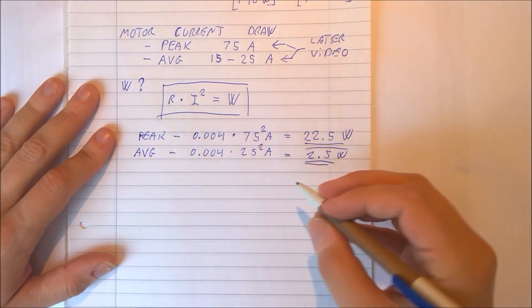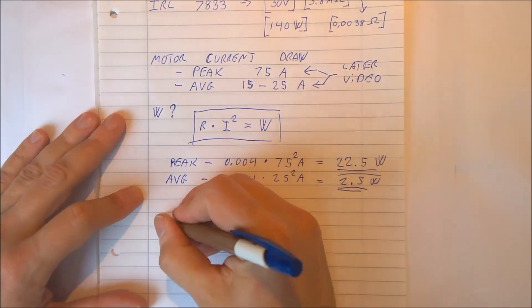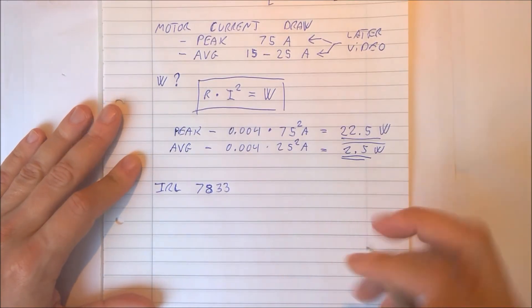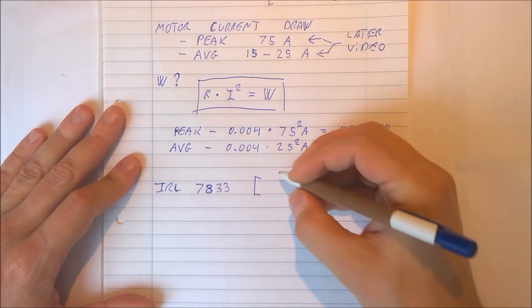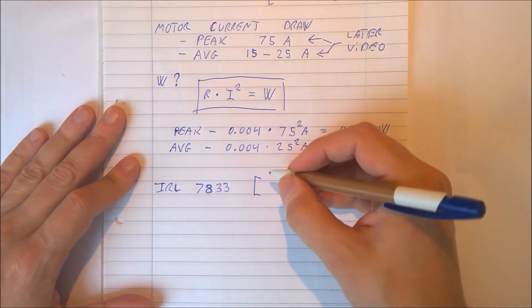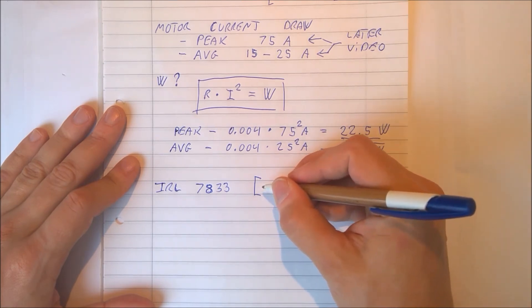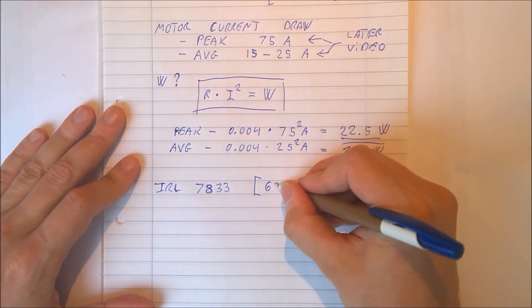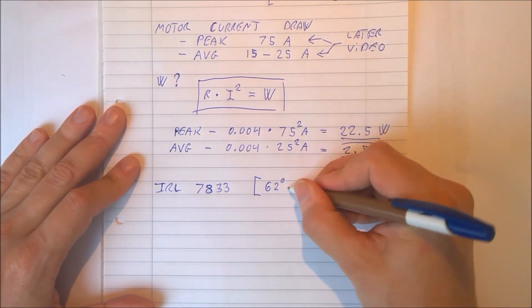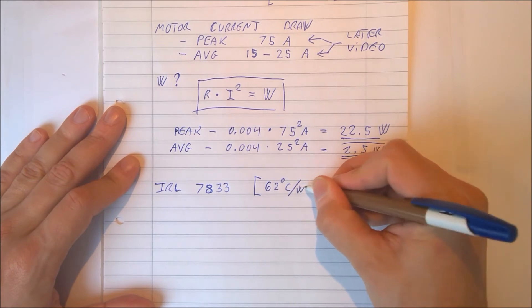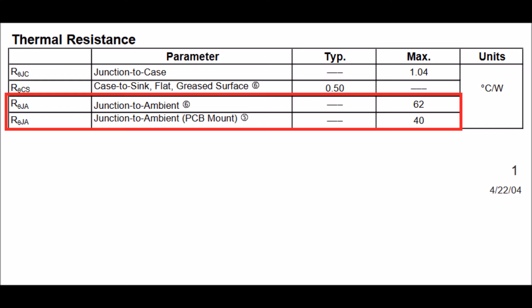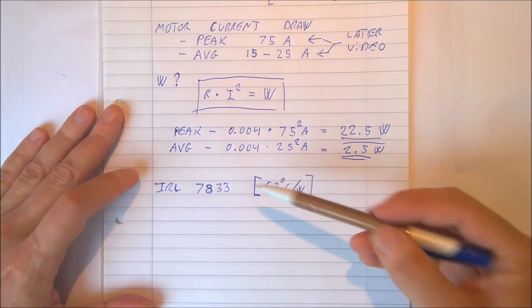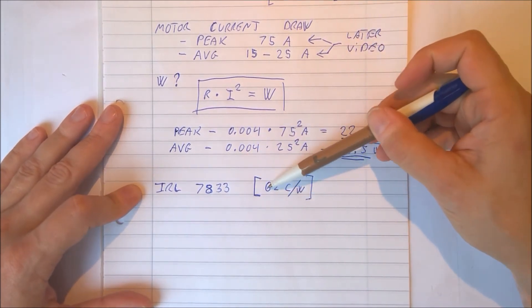What we do then is we go and look at our MOSFET datasheet. And for the IRL7833, we have a value that is listed in the datasheet. And that is the junction to ambient temperature. And that value is listed for my MOSFET at 62 degrees Celsius per watt.